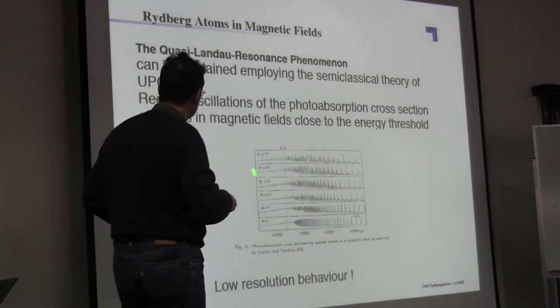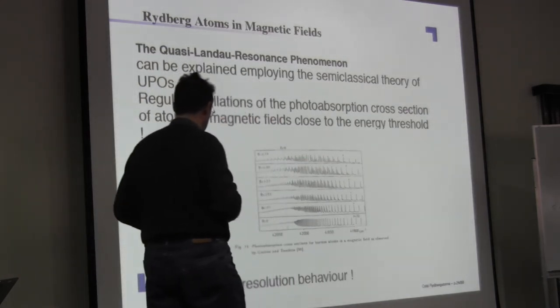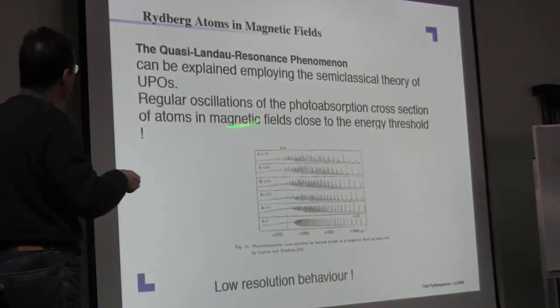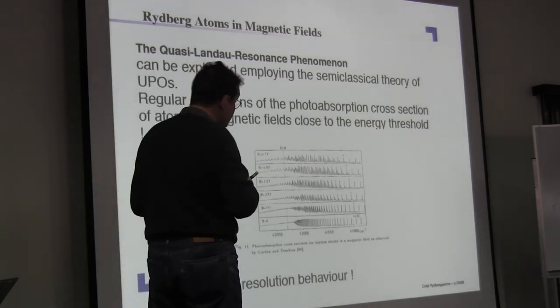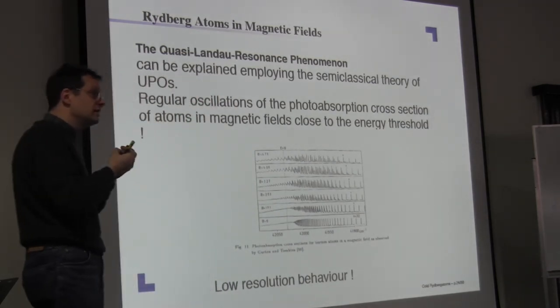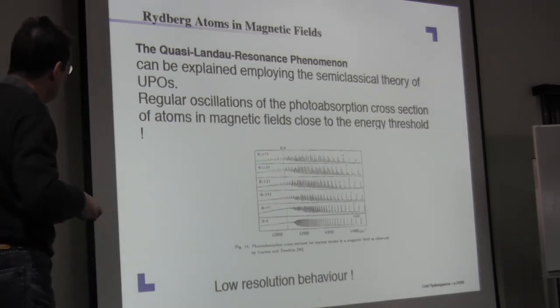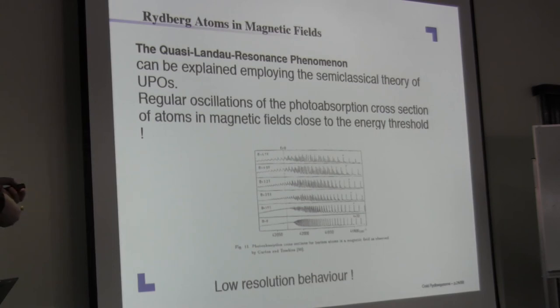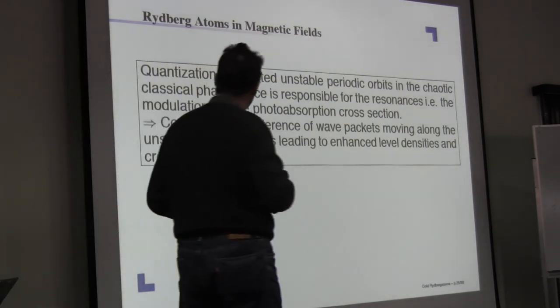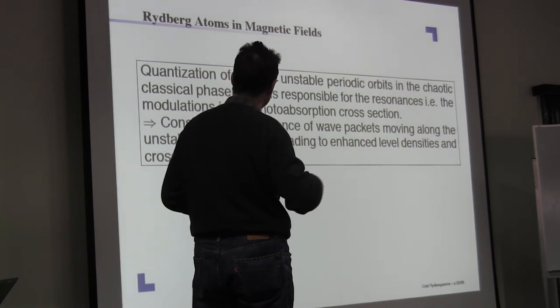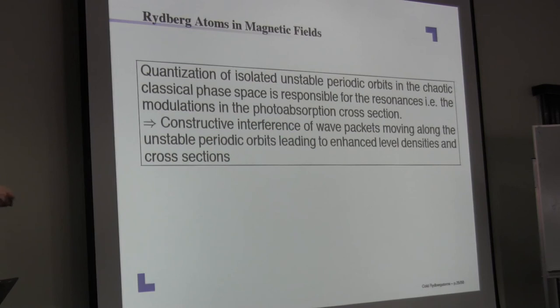which is even otherwise, if you do the exact quantum mechanical calculation, not understandable. So in some cases, semi-classical is clearly even superior to exact quantum calculations because it catches the true features of a system like these oscillations, although the underlying details are much, much more complicated. That is essentially the constructive interference of wave packets moving along the unstable periodic orbits which leads to these oscillations in the photo-absorption cross-section.